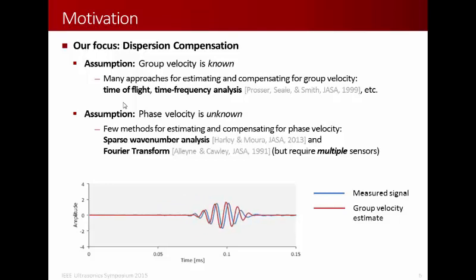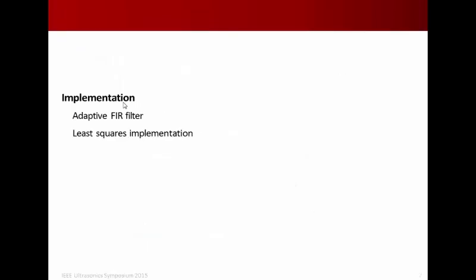So essentially, we have down here experimental data, where we have our measured signal in blue and a group velocity estimate, which assumes the group velocity and phase velocity are the same, in red. And we can see that they do not match up. So we want to develop something that will make these match. And we're going to do that using a filter approach, specifically an adaptive FIR filter.